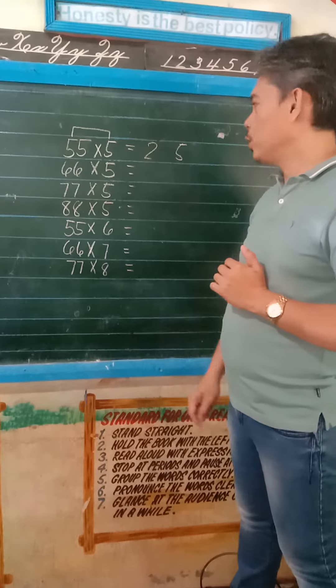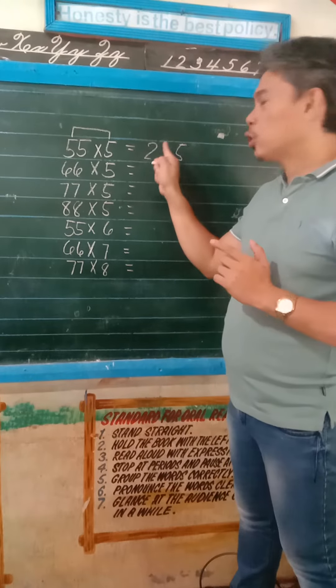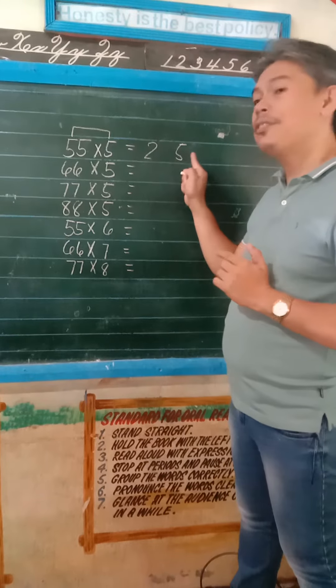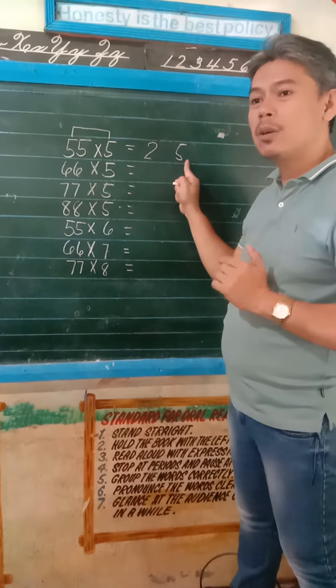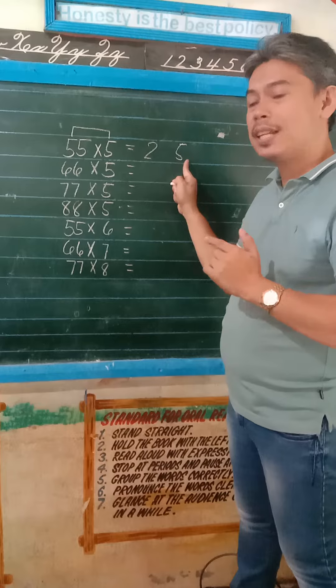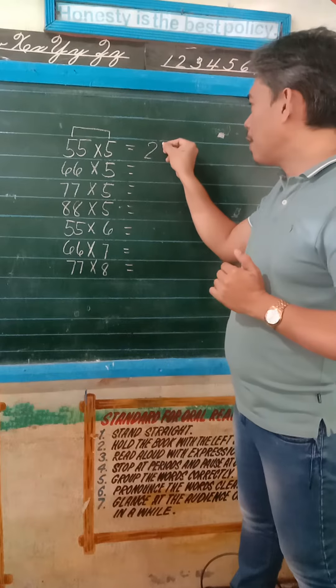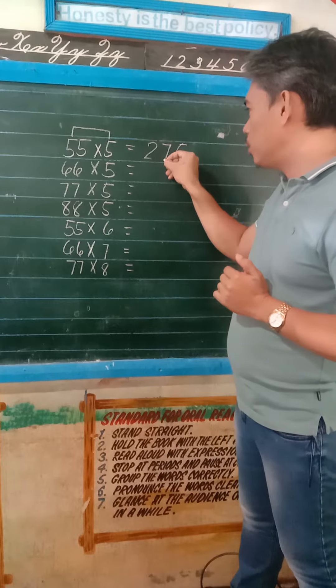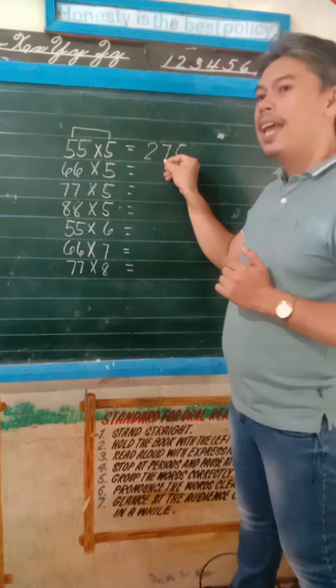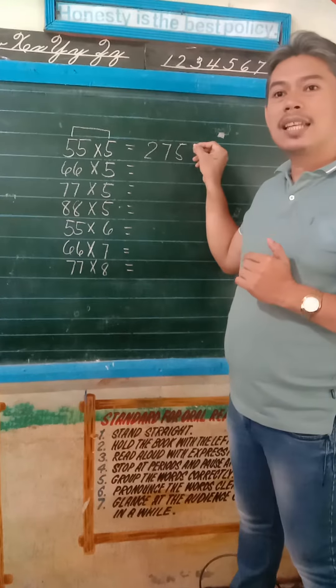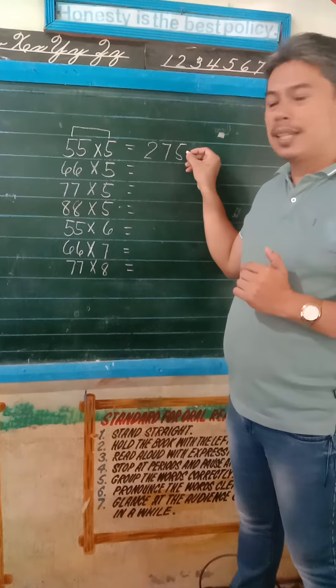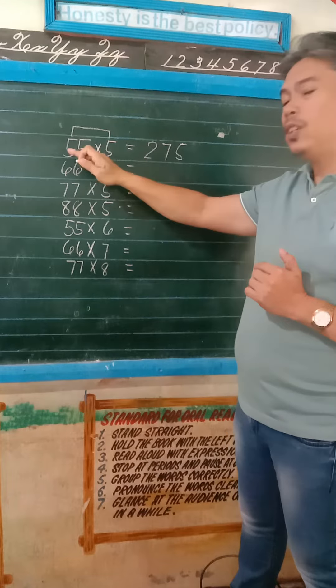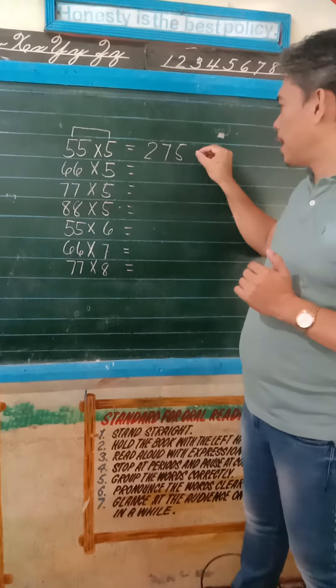You are going to add 2 plus 5, which is equal to 7. Write 7 here between 2 and 5. And this is the product of 55 and 5.